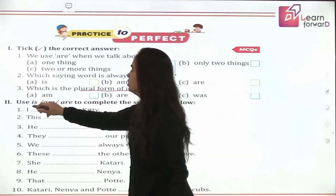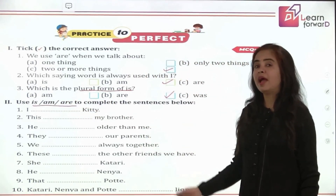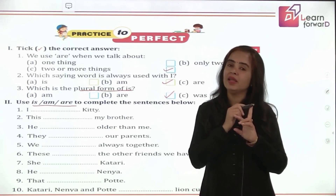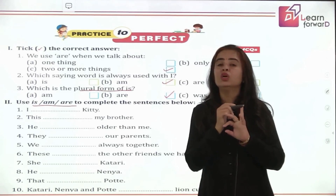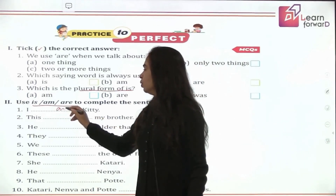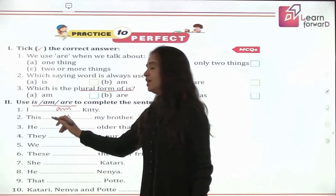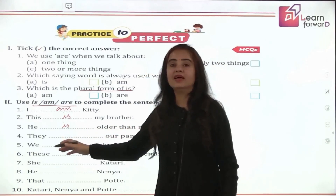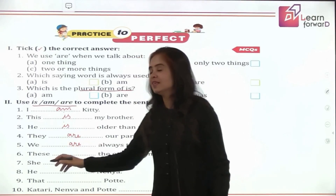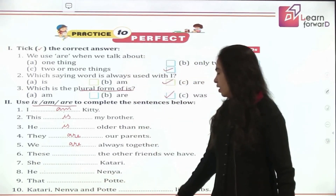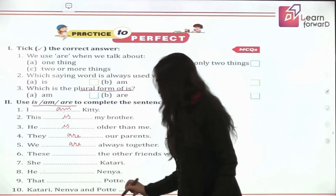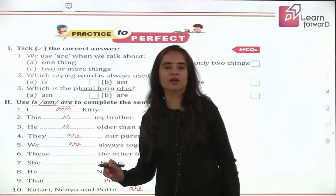In the next exercise, use 'is', 'are', or 'am' to complete the sentences. Remember: 'I' is followed by 'am'; singular is followed by 'is'; 'this' and 'that' are singular; plural, 'you', 'those', and 'these' are followed by 'are'. Let's do this quickly. 'I am Kitty.' 'This is my brother.' 'He is older than me' — he is singular. 'They are our parents' — they is plural. 'We are...' — plural again. Here, Kataria, Nenya and Pate — we are talking about three, so that is plural — use 'are'. The rest you will do yourselves as practice.